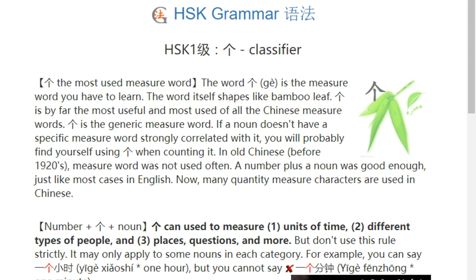个 is the generic measure word. If a noun doesn't have a specific measure word strongly correlated to it, then you will probably use 个.